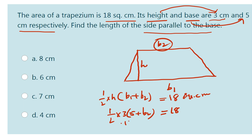3 into 5, 15 plus 3B2 is equal to, so 2 into 18, 36. That implies 3B2 is equal to 36 minus 15, that is equal to 21. So B2 is equal to 21 by 3, that is 7.